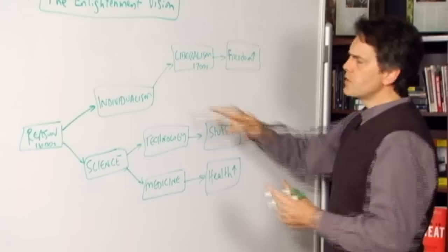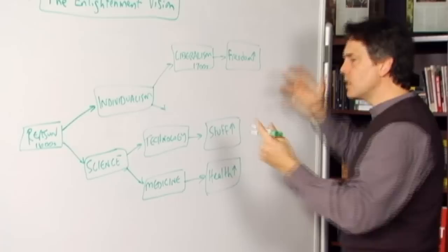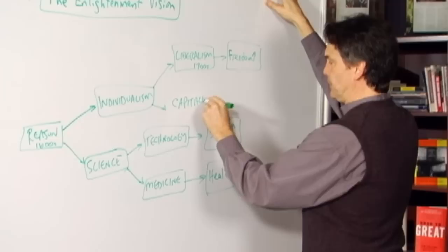Now, if we take individualism seriously, we can certainly talk about the political institutions here, but if we take individualism seriously, that's going to have economic implications. For example, what we also find is a dramatic increase in capitalist institutions, free market institutions.